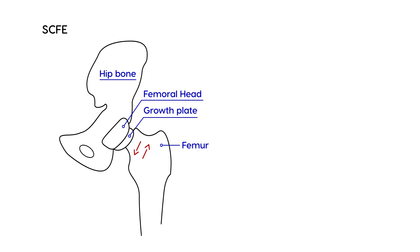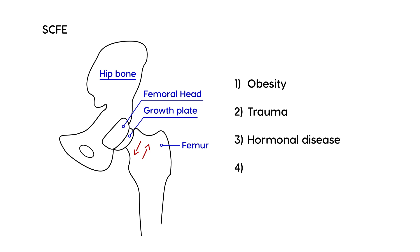The reason this happens is because during adolescence, during this rapid phase of growth, there are four different causes. The first one is obesity — obesity can cause a tremendous amount of force on the femoral area of the skeleton. The second reason is trauma. Third, hormonal changes are a definite risk factor. And fourth, inflammation can also lead to this.